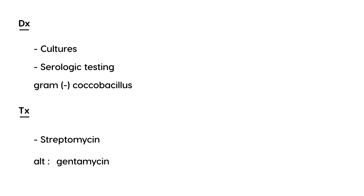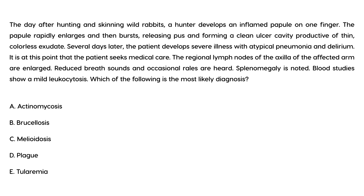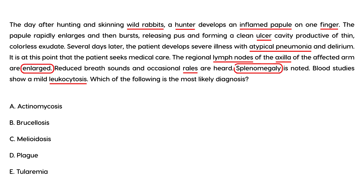Clinical vignette one: The day after hunting and skinning wild rabbits, a hunter develops an inflamed papule on one finger. The papule rapidly enlarges, bursts, releasing pus and forming a clean ulcer with thin purulent exudate. Several days later, the patient develops severe illness with atypical pneumonia and delirium. Regional lymph nodes of the axilla are enlarged, with reduced breath sounds, rales, and splenomegaly. Blood studies show mild leukocytosis. The key findings are the rabbit exposure and the papule on the finger, pointing to tularemia.